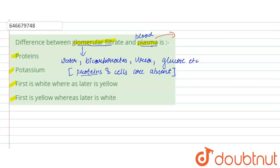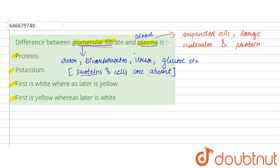Now let us see what is present in the blood plasma. Blood plasma is the component of blood. There are suspended cells found in the plasma, large molecules are also found, and finally, a lot of proteins are found in the plasma — which are absent in the glomerular filtrate.